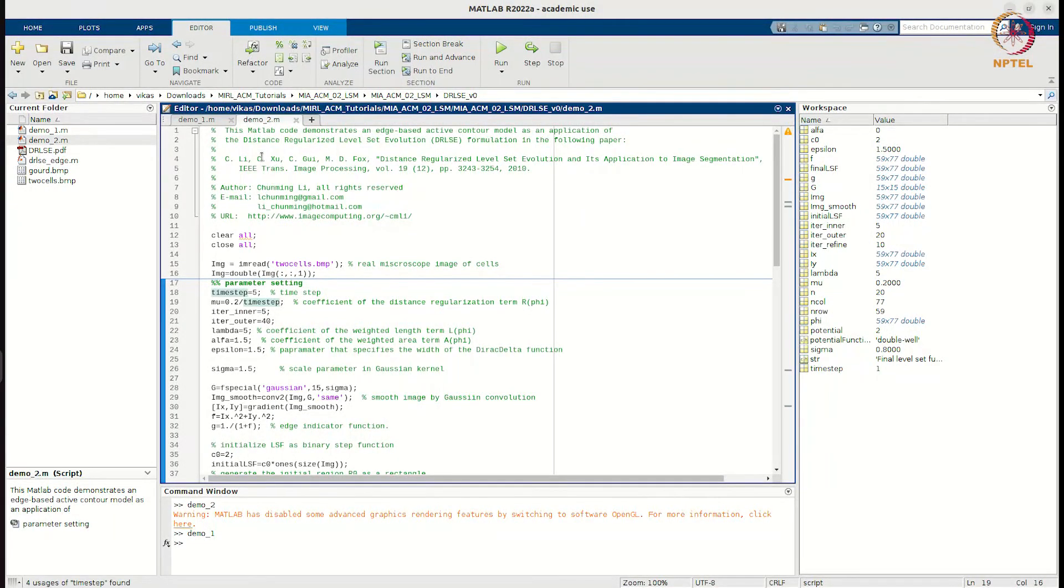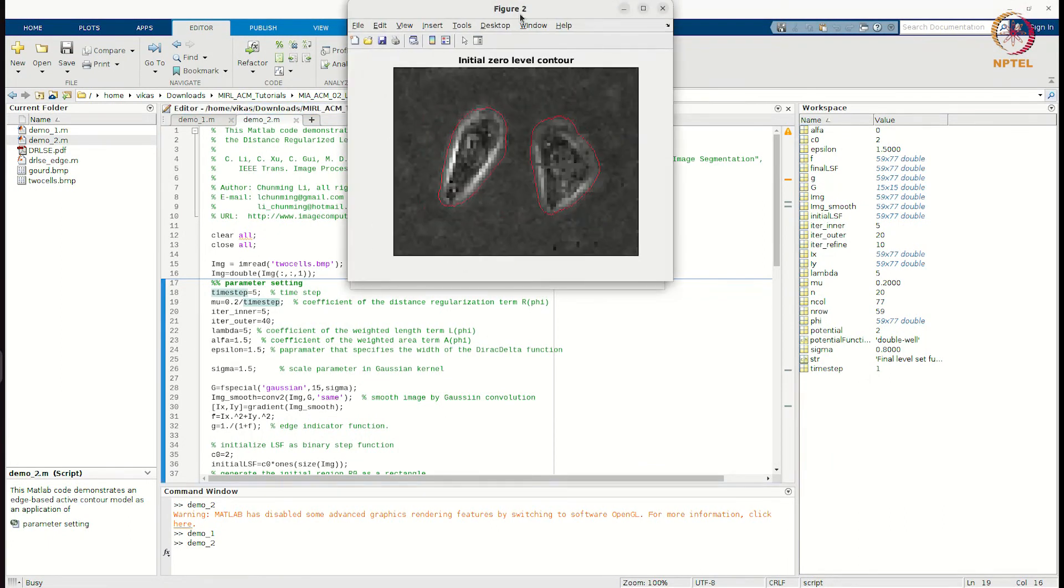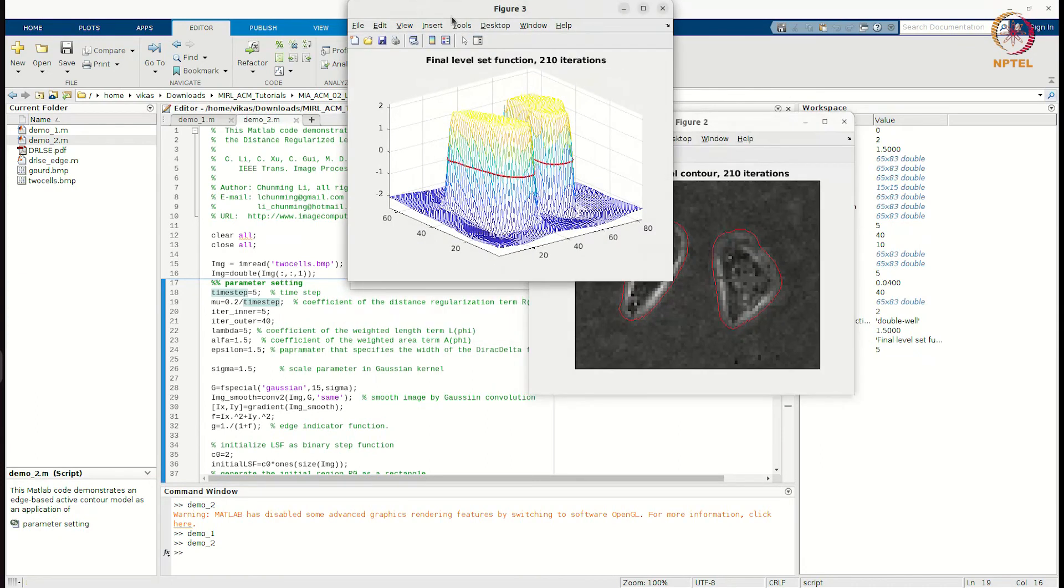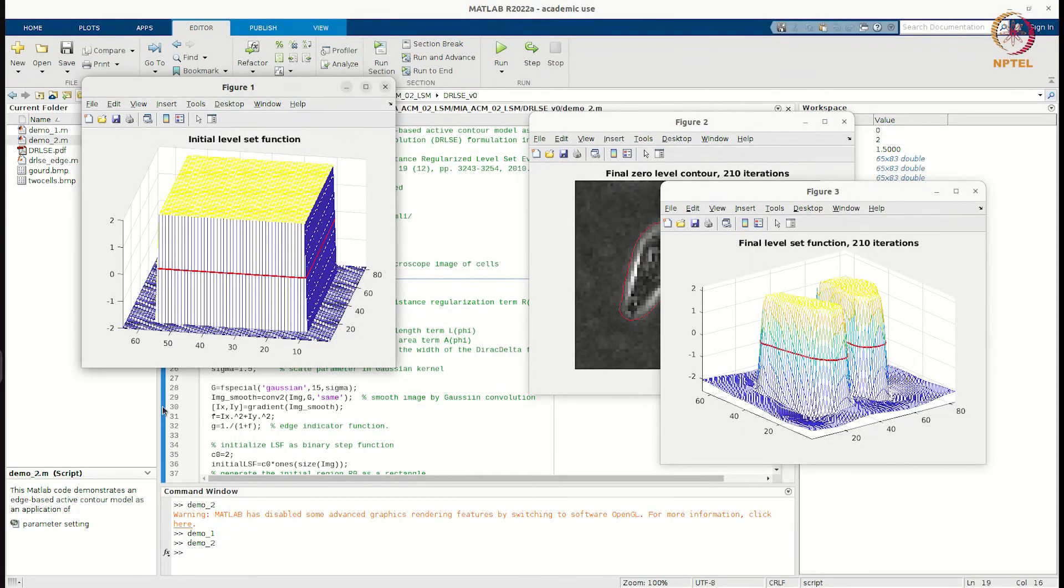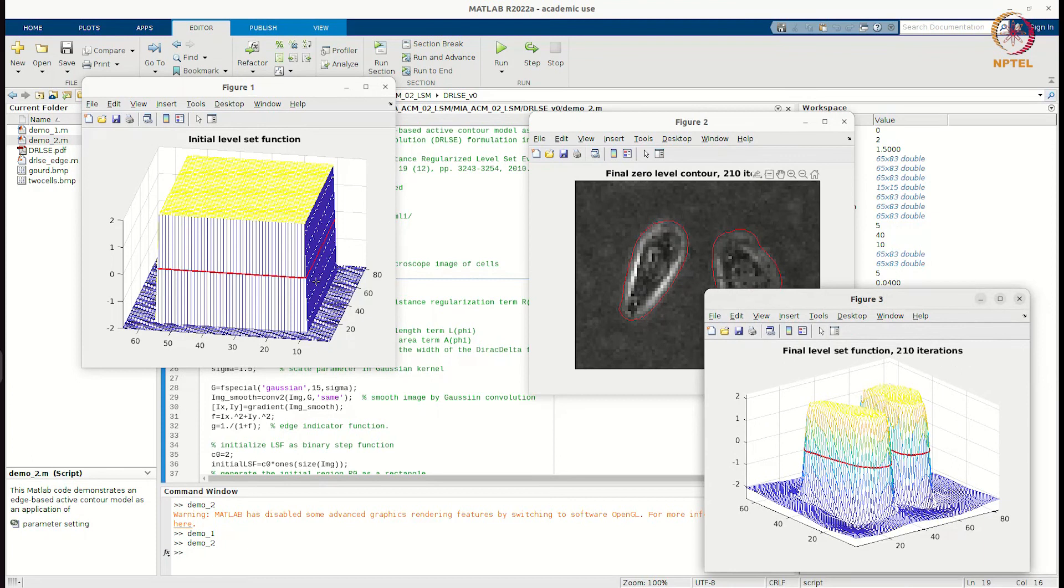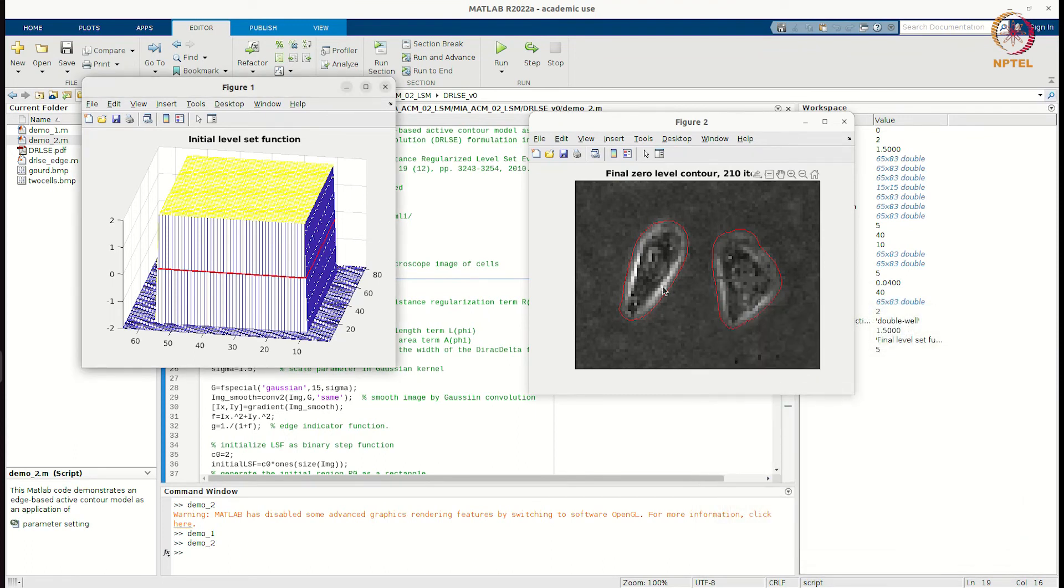So hopefully you would have seen this. You start with some initial function, level set function. In this case it is binary step. And after some time it evolves, after about two hundred iterations. This binary function is evolved to this shape, and now we are able to capture these two objects. These two objects are very nicely segmented by our level set formulation. So that is first demo.